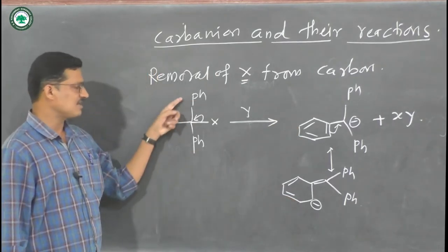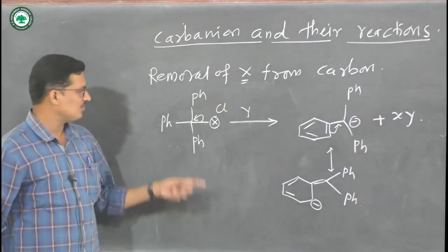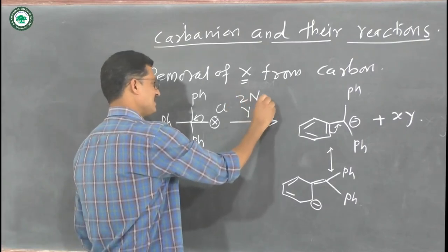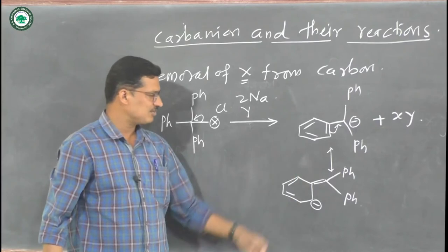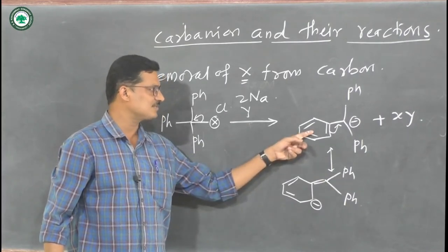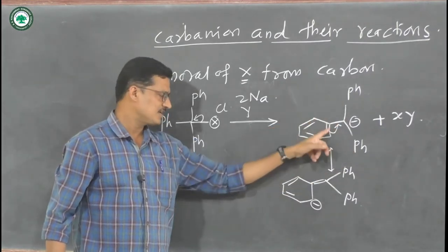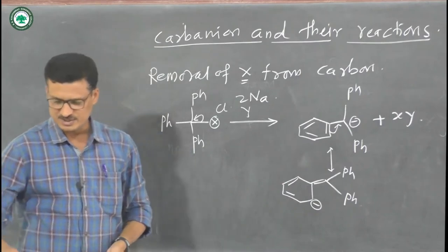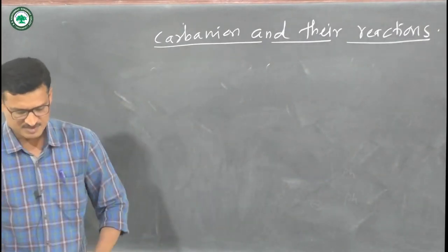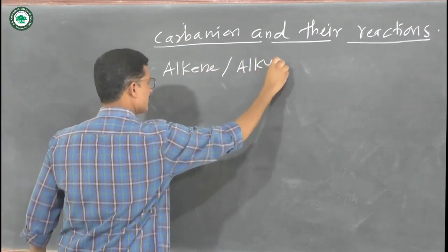When we take triphenylmethyl chloride — instead of Cl, we treat the compound with a Y reagent such as sodium metal — there is formation of a carbanion. This carbanion is well stabilized by the three phenyl ring systems. The carbanion is delocalized on the first phenyl ring system, as well as the second and third phenyl ring systems. So the carbanion is well stabilized by all three phenyl rings.